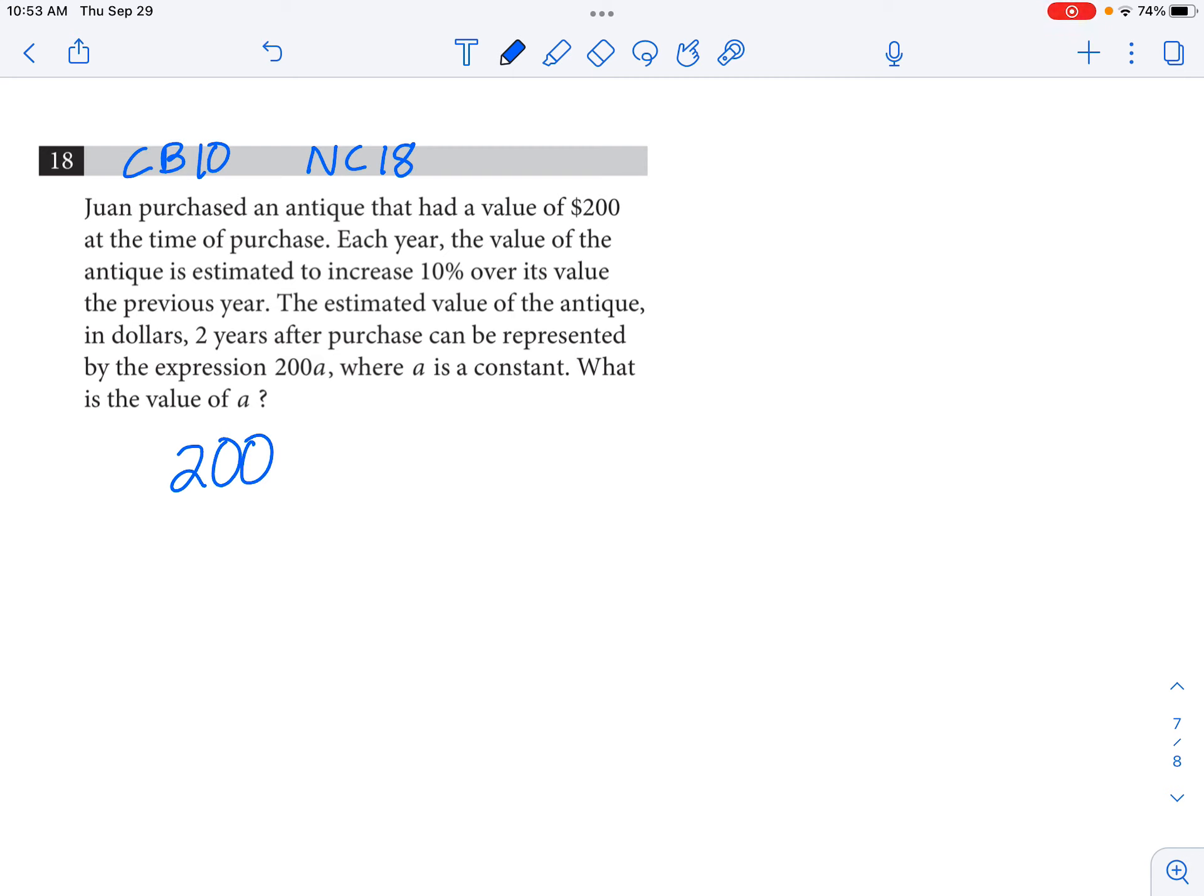Now this antique is going to go up by 10% each year. It's appreciating in value. So after one year, the value of the item would be 200 times 1.1, and then after a second year, we can multiply by 1.1 again.